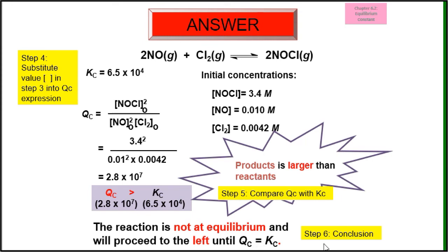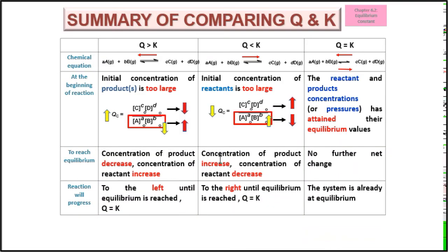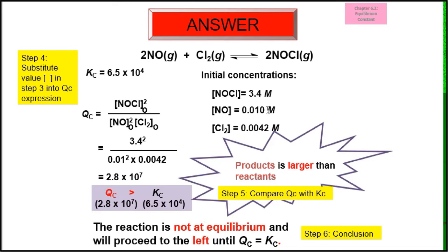Step 6: write a detailed explanation. Since Q is larger than K, in order to achieve equilibrium the concentration of the product must decrease — in this case the product is NOCl. The concentration of the reactants NO and Cl₂ must increase. This is achieved by shifting the system to the left. You should add sentences to explain the change in concentration of both product and reactant.